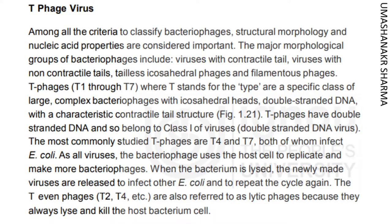The most commonly studied T-phages are T4 and T7, both of which infect E. coli. As with all viruses, the bacteriophage uses the host cell to replicate and make more bacteriophages. When the bacterium is lysed, the newly made viruses are released to infect other E. coli and repeat the cycle. The T-even phages, T2, T4, etc., are also referred to as lytic phages because they always lyse and kill the host bacterium cell.